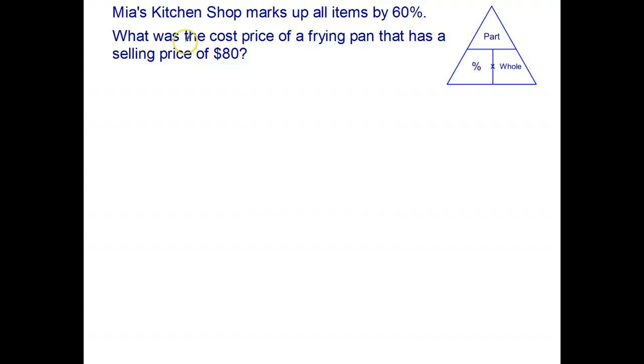For this particular question, again, we're looking for the original price. So the cost price is the original amount. The selling price in this case is the part. Here's an example where the part is greater than the original amount, and that's the markup just there. So we're going to start by writing original amount equals part over percent.